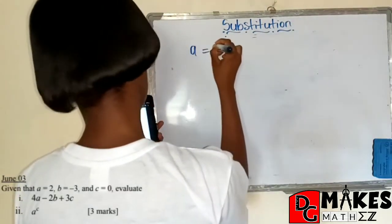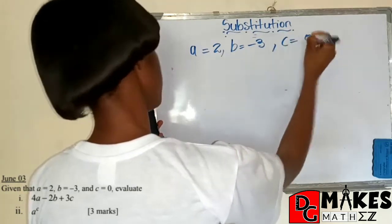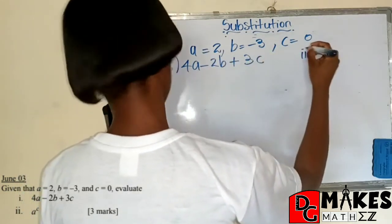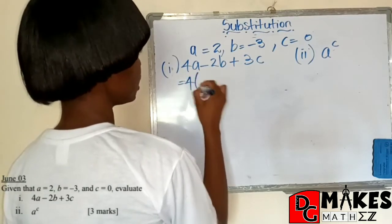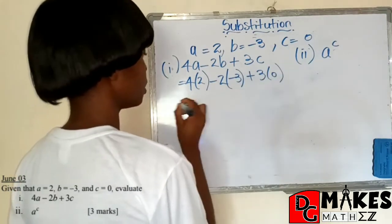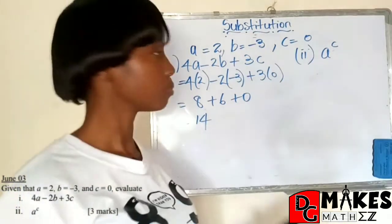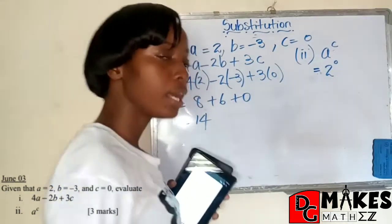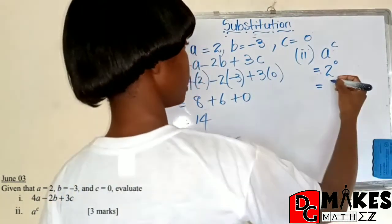Our next question comes from June 2003. And it says, given that a is equal to 2, b is equal to negative 3, and c is equal to 0, evaluate 4a minus 2b plus 3c, and we're also going to be evaluating a to the power of c. Here we go. 4 times a, which is 2, minus 2 times b, which is negative 3, plus 3 times 0. That's pretty much 8, positive 6. 8 plus 6 plus 0, that will give us 14. Quick and simple. Let's go to a to the power of c, that would be 2 to the power of 0. And if you know your laws of indices very well, you will know that any number raised to the power of 0 will give the answer of 1.